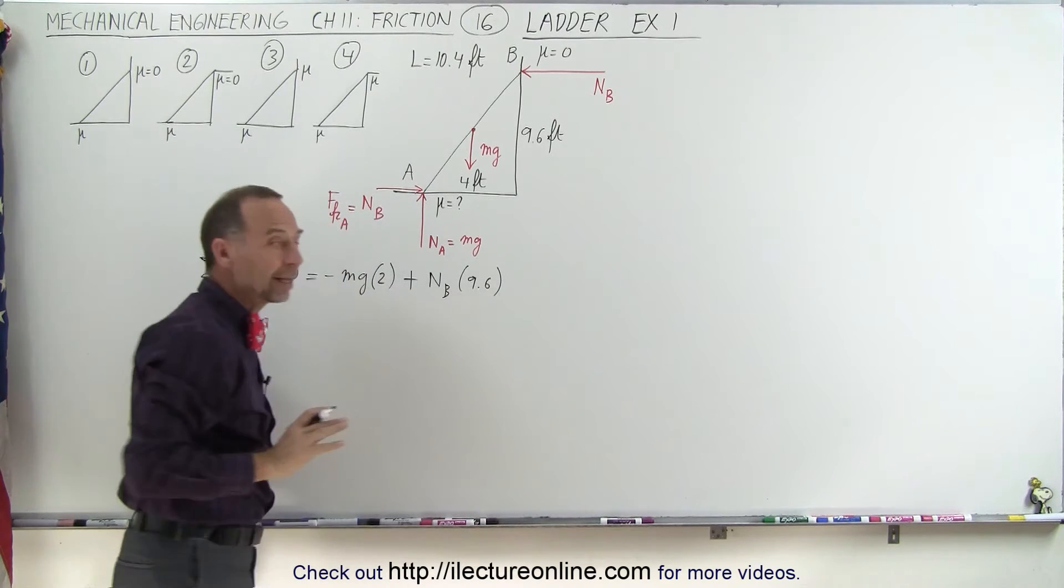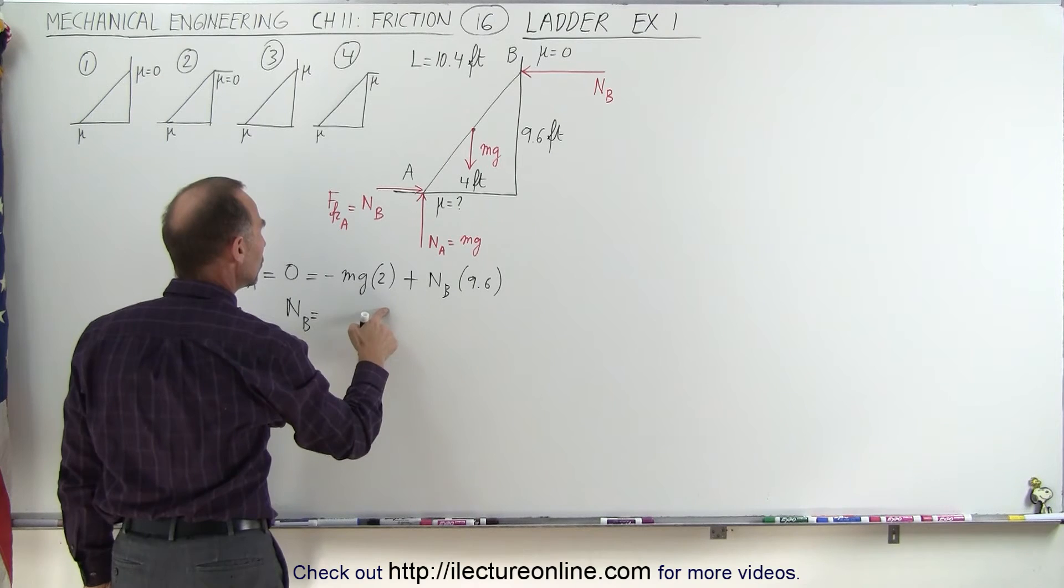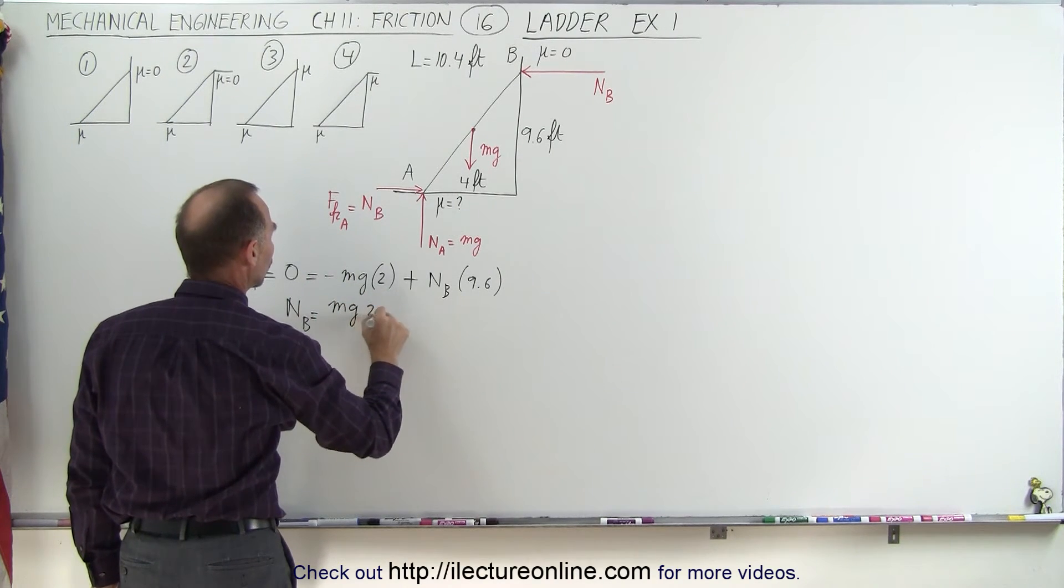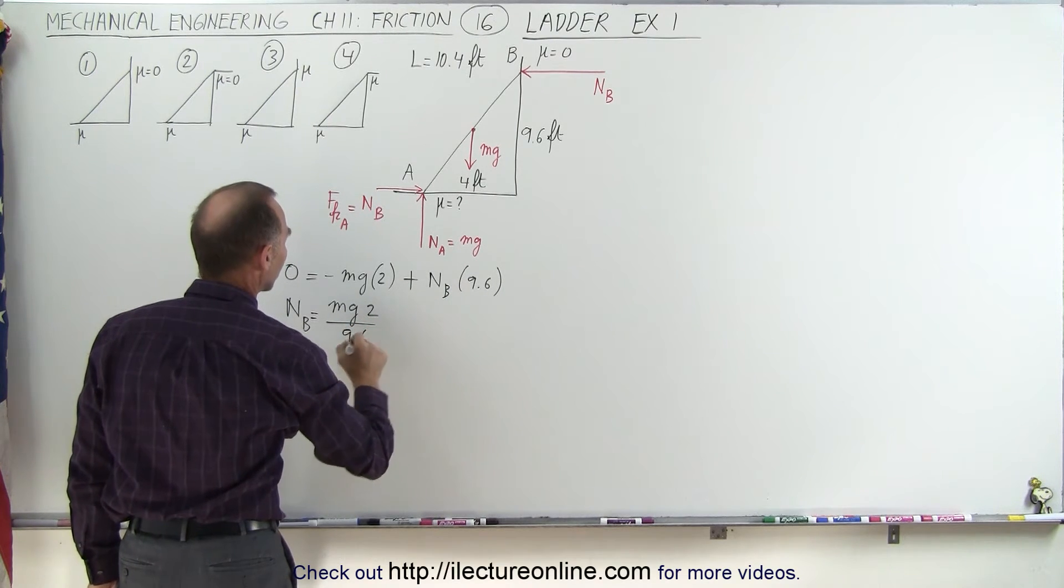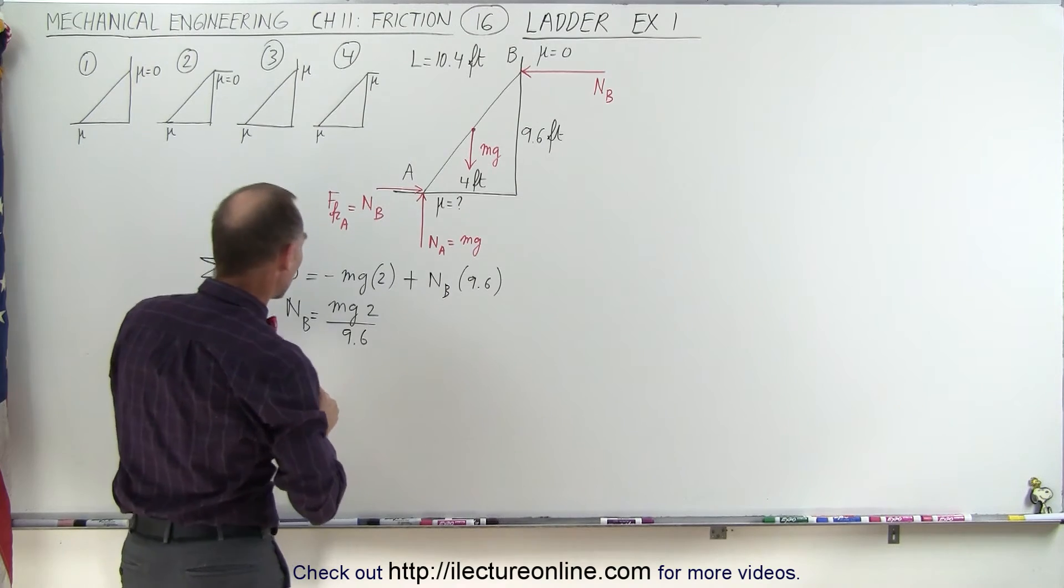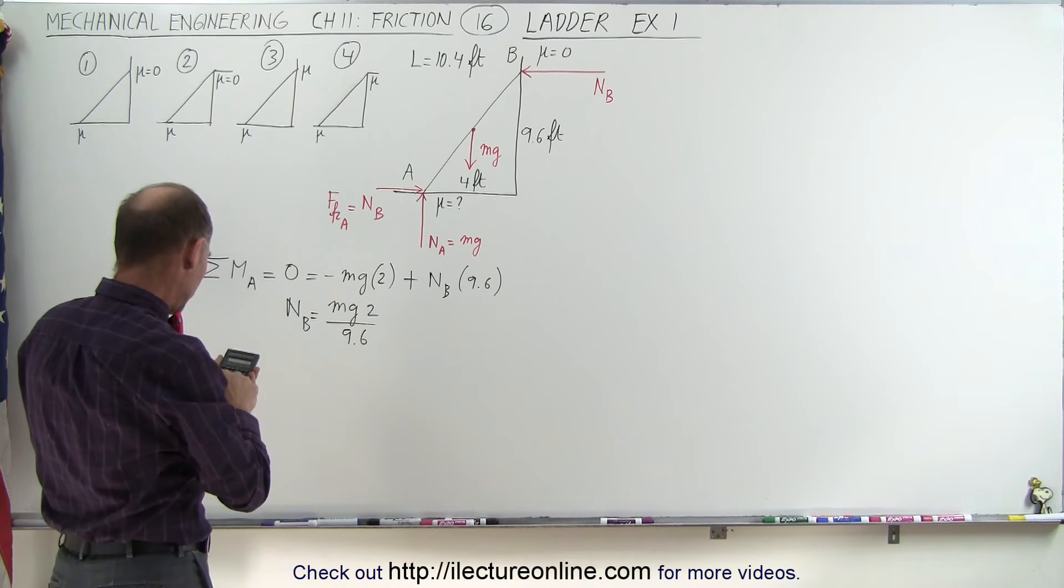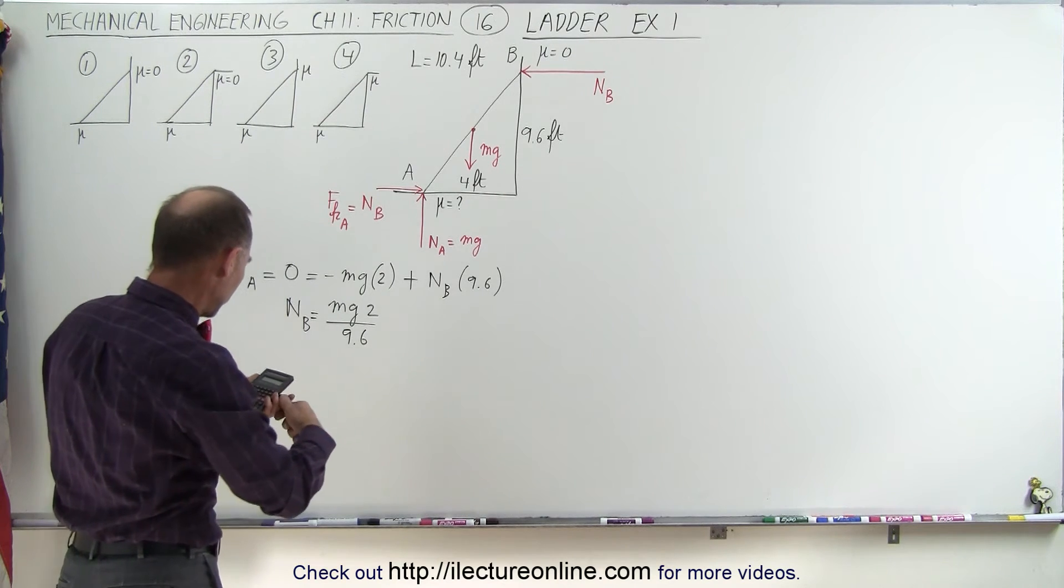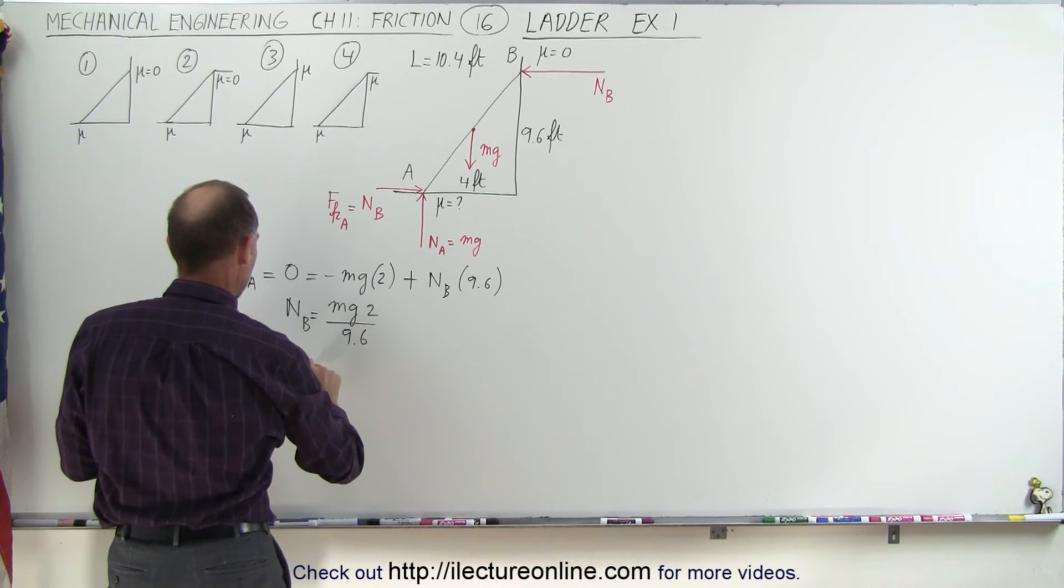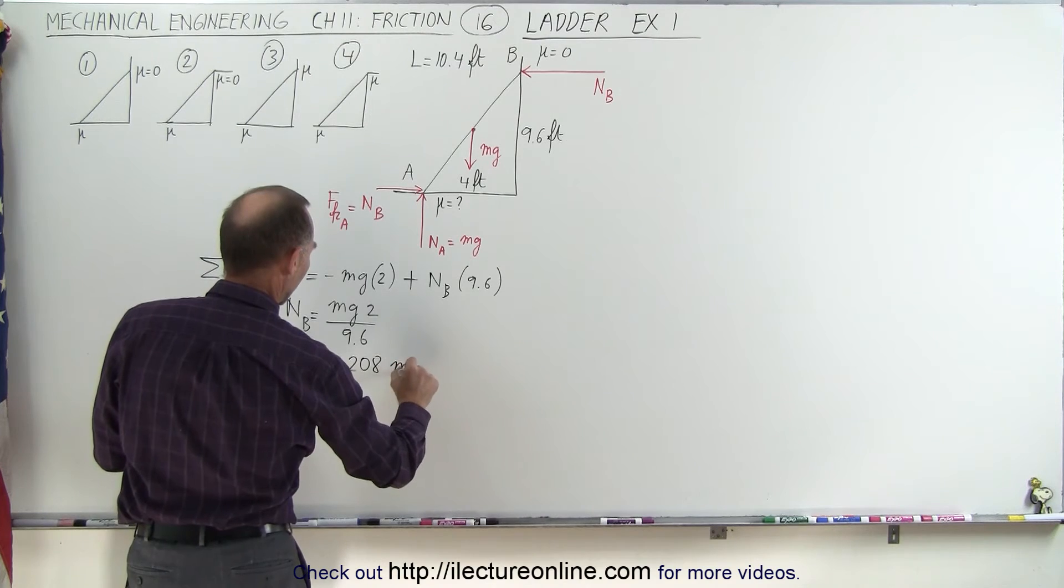From this, we can calculate N sub B. N sub B then becomes equal to, when we move this across, we have Mg times two divided by the coefficient, 9.6. Well, we're not given Mg, so we're simply going to do it in terms of Mg. So two divided by 9.6 equals 0.208. So N sub B is equal to 0.208 times Mg.